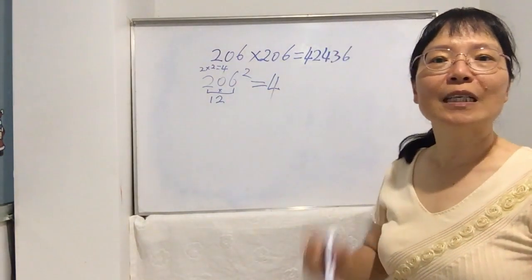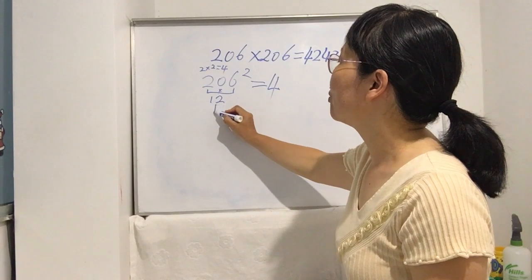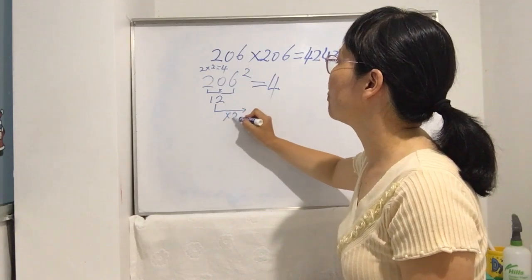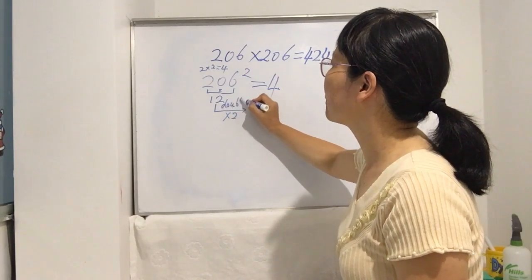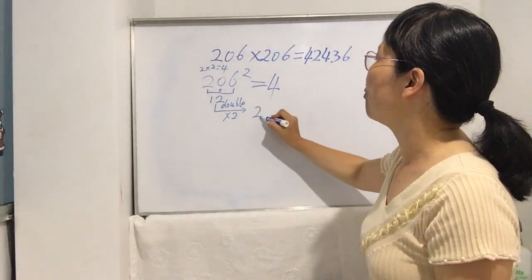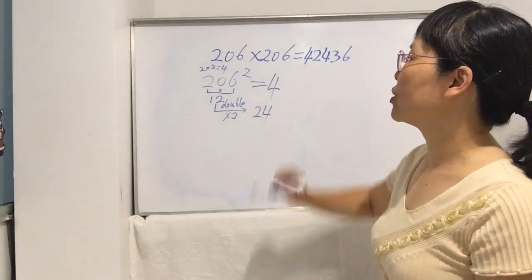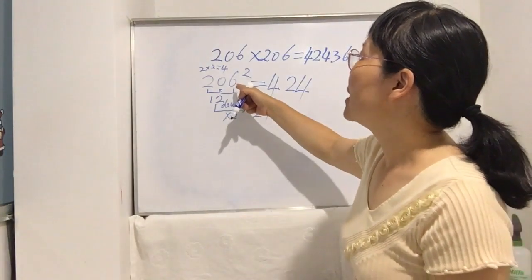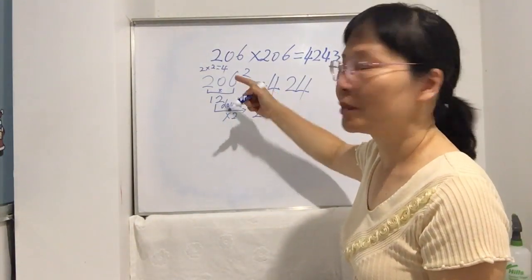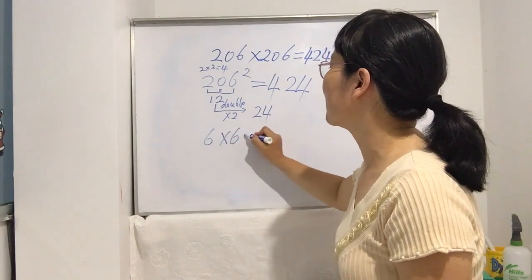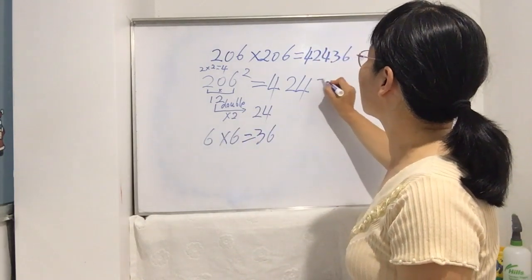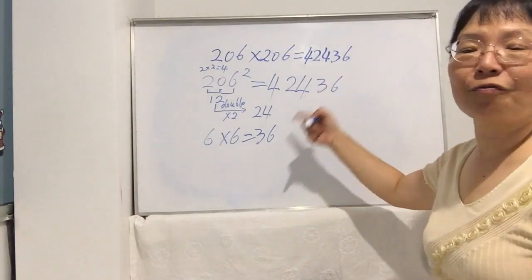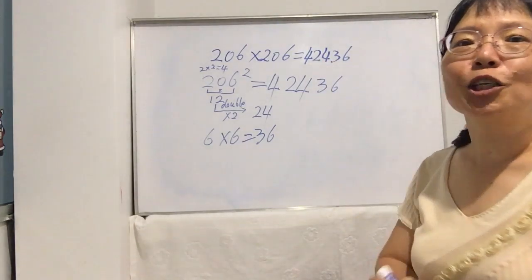The second step: use the hundreds digit times the units digit. Two times six is twelve. Then double it — twelve times two is twenty-four. Write down twenty-four in the middle. The third step: units digit times itself — six times six is thirty-six. This gives exactly the same answer, and it's much faster than the normal way.